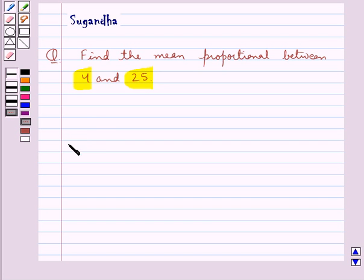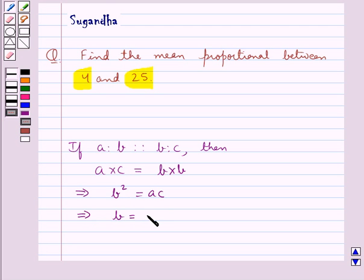Now if we have a is to b is proportional to b is to c, then the product of extremes a multiplied by c is equal to product of means, that is b multiplied by b. Or we can say that b squared is equal to ac, or b is equal to square root ac. This b is called the mean proportional.